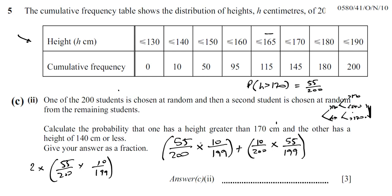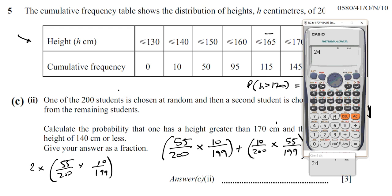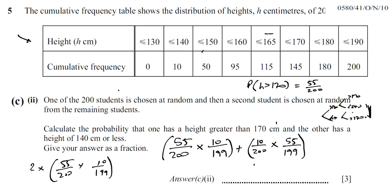You don't have to draw a tree diagram — you can do it mentally — but you must remember to count both cases. Using a calculator: 2 times (55/200) times (10/199) gives the answer 11 over 398. So the final answer is 11/398.